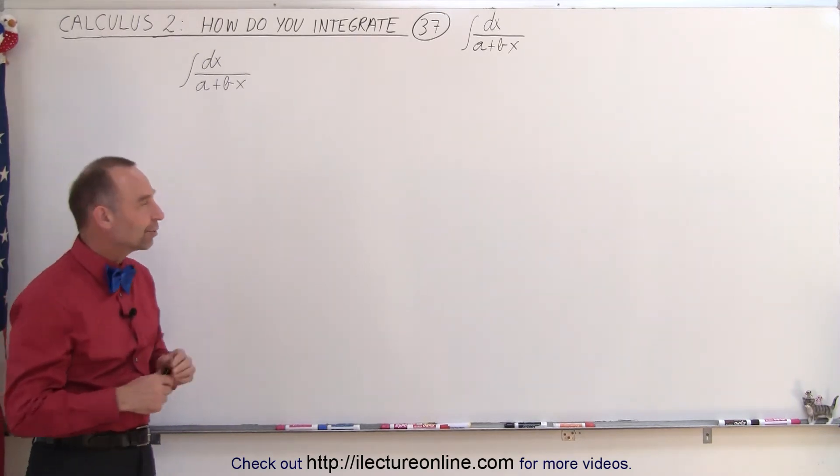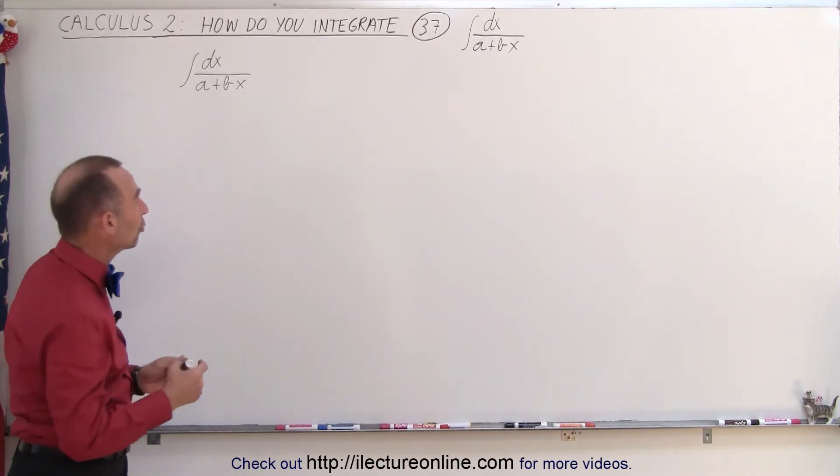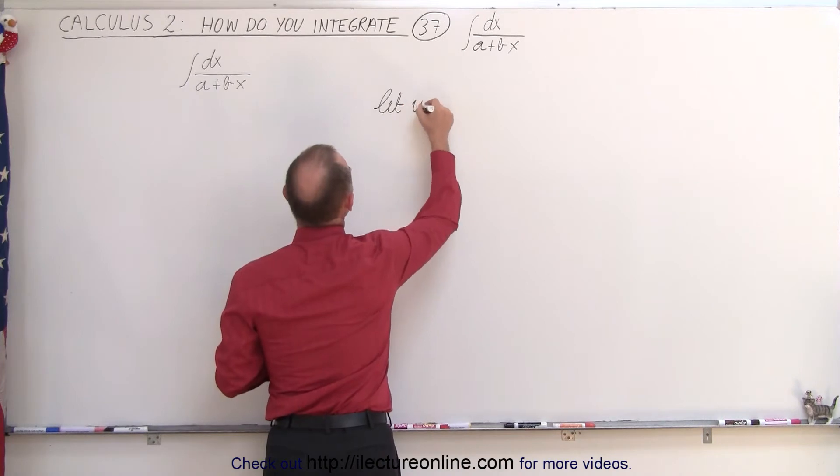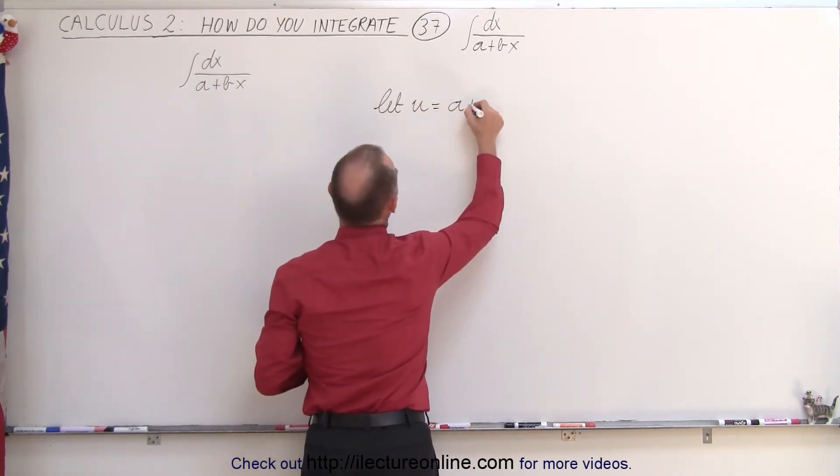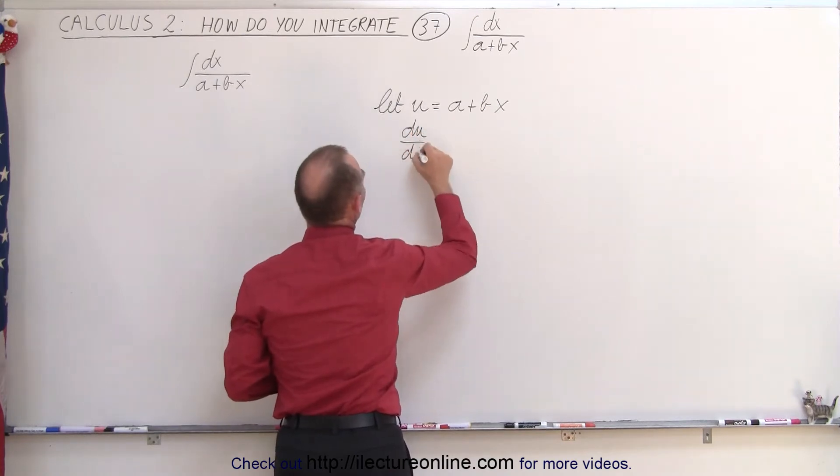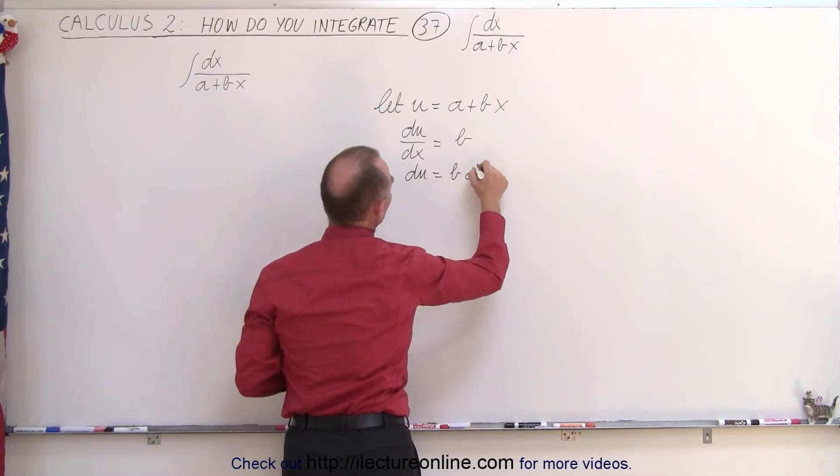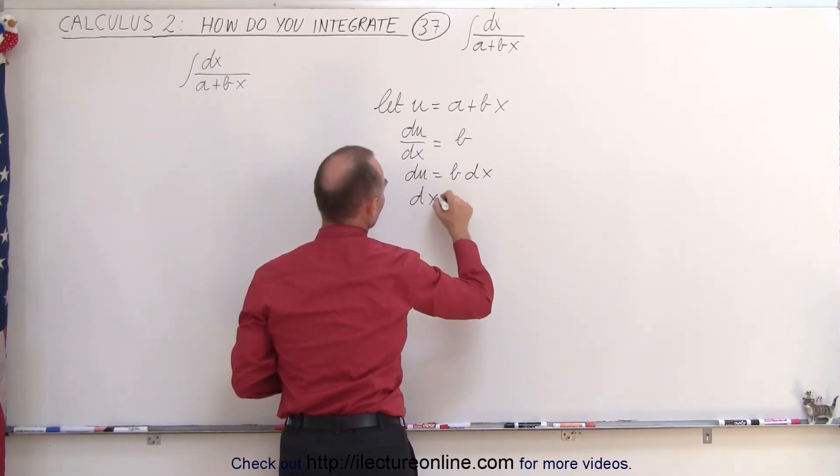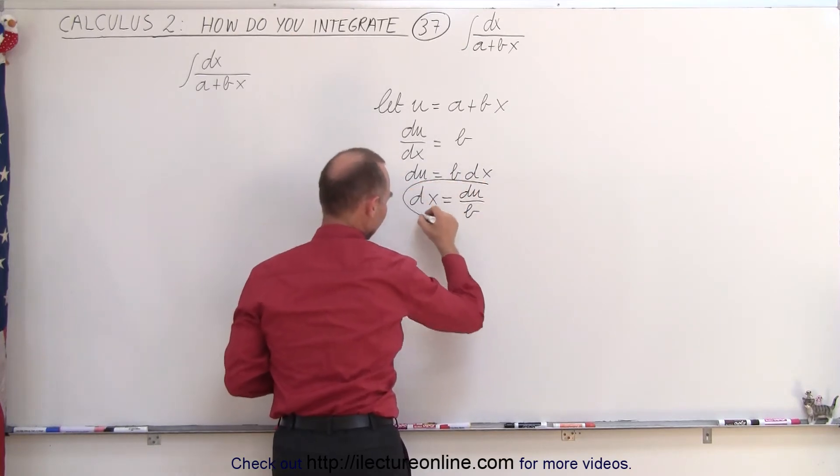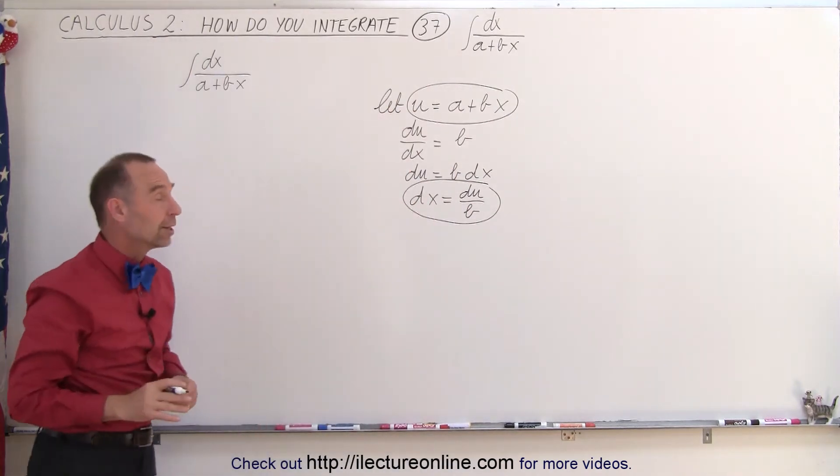How do we integrate that? Well, if you don't see the solution immediately, you can always try to use the substitution method where we say let u equals what's in the denominator, a plus bx. Then du dx is equal to b, so du is equal to b dx, or dx is equal to du divided by b. We then take this and substitute that back into our integral to see what we end up with.